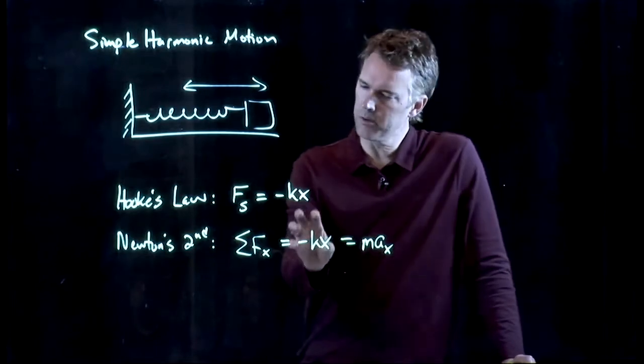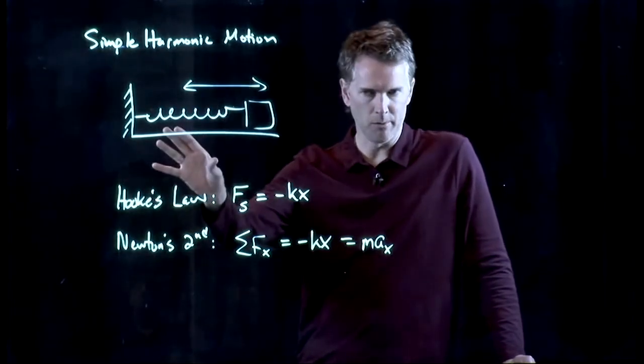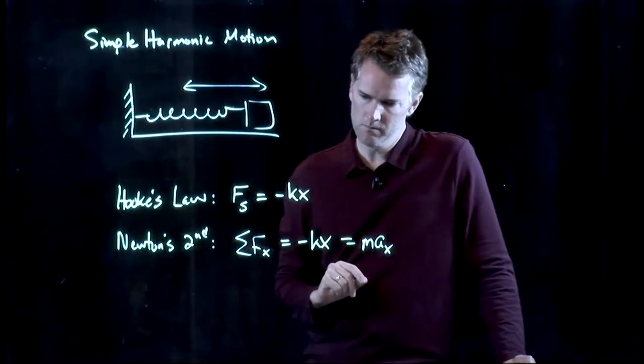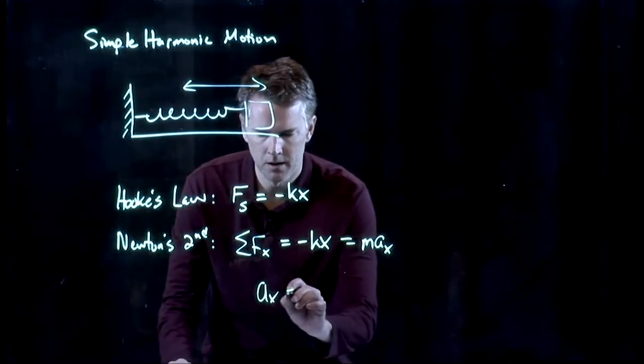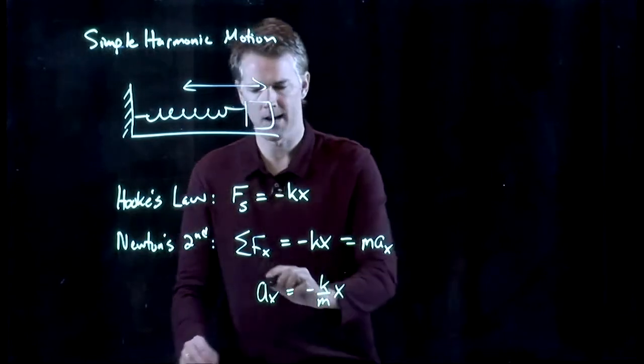If you have more than one force, you would put it in here. But in this case, we're ignoring friction, ignoring air resistance. All we have is the spring. All right. We can solve this equation now for acceleration. Acceleration is negative k over m times x.